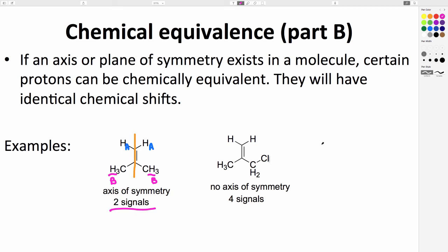If you look at the top right molecule, there's no axis or plane of symmetry, so all the protons are different from each other. There's HA, HB, HC, and HD. We expect to see four signals in that spectrum.